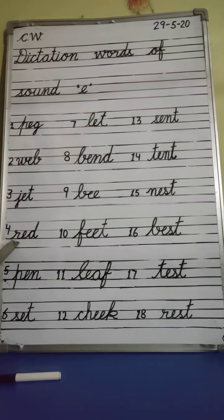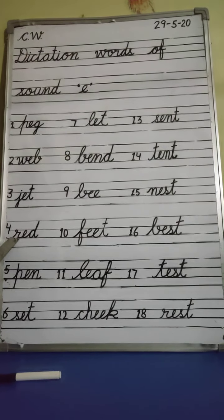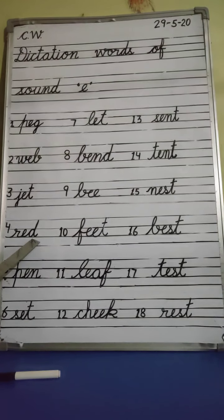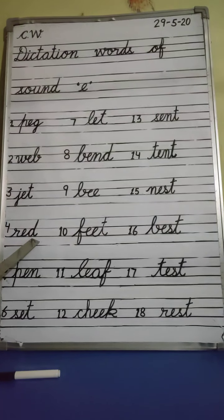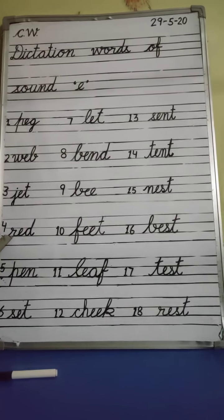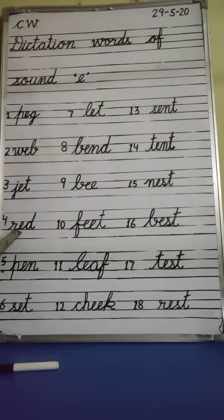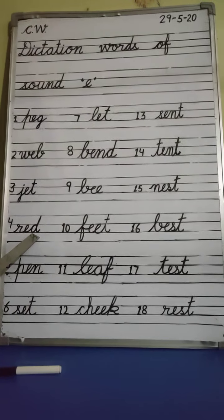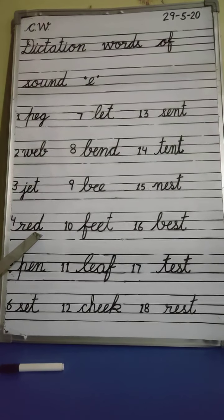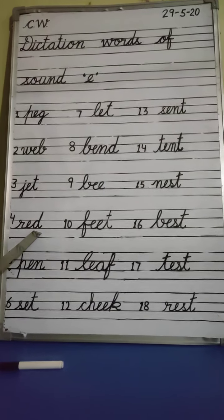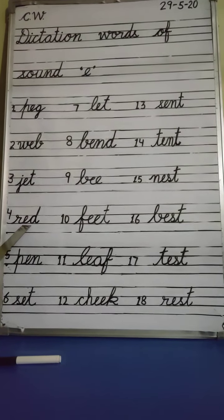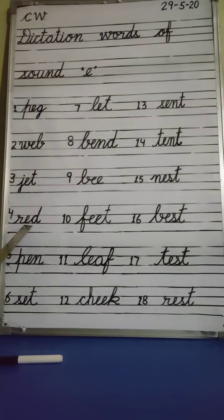Number 4. R, E, D — Red. What is this? Red. Red means the color red. Okay.